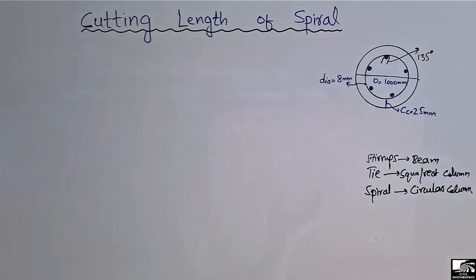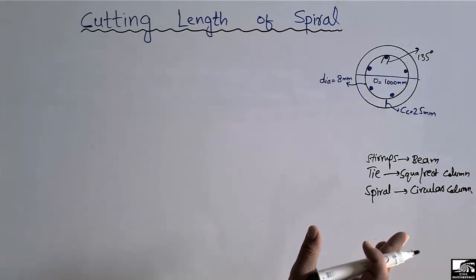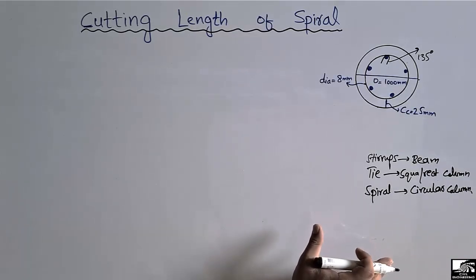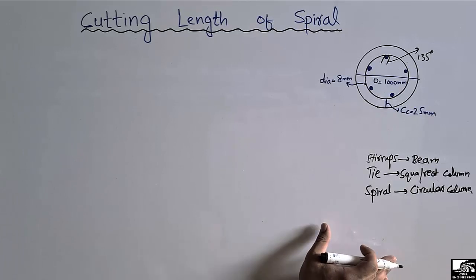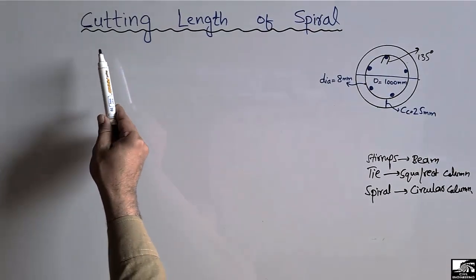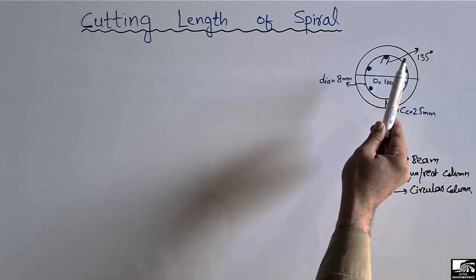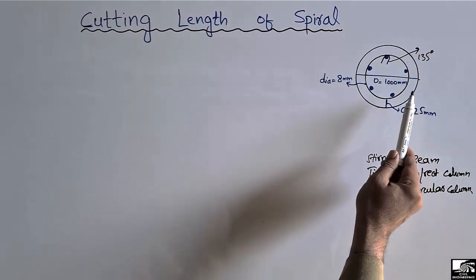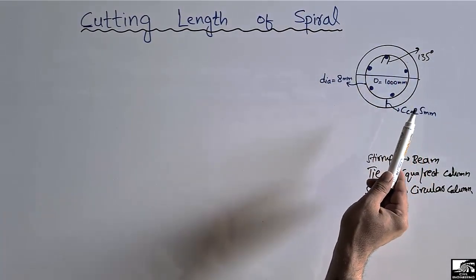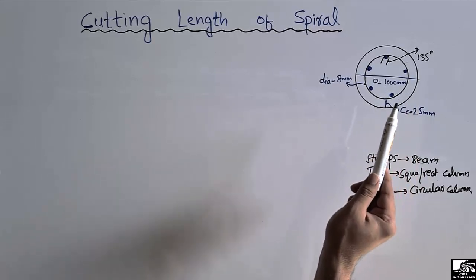The purpose of transverse reinforcement is to resist lateral loads and for the confinement of concrete in the structural member. Now let's come to the topic of calculating the cutting length of the spiral in a column. Let's suppose this is any column with given dimensions and a given spiral bar diameter.